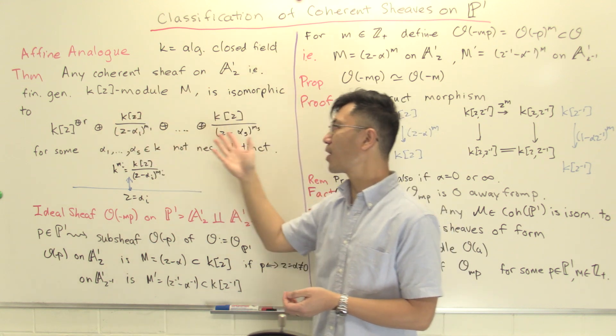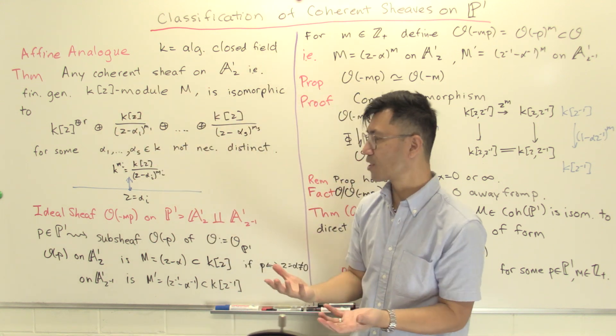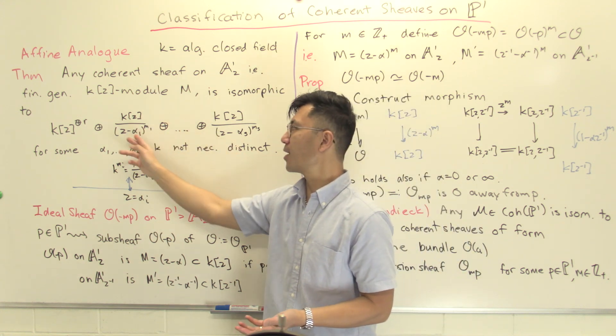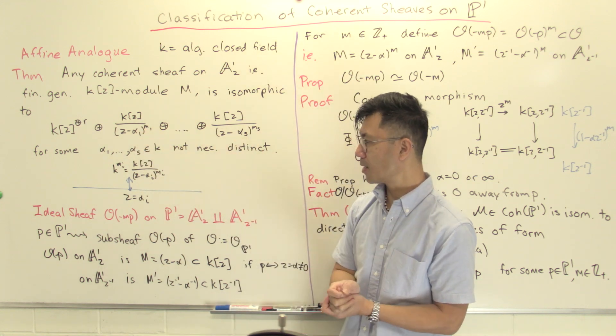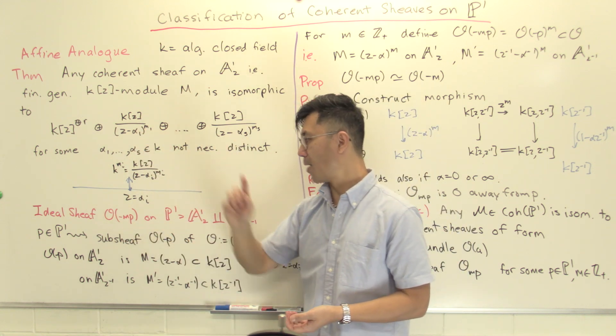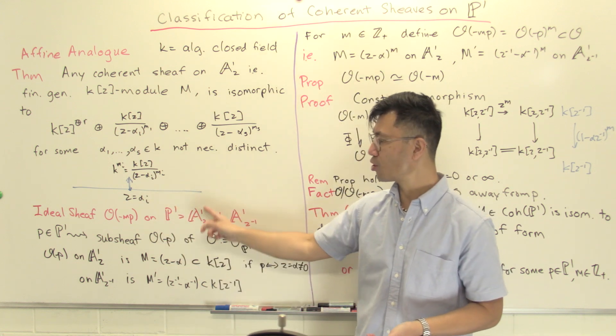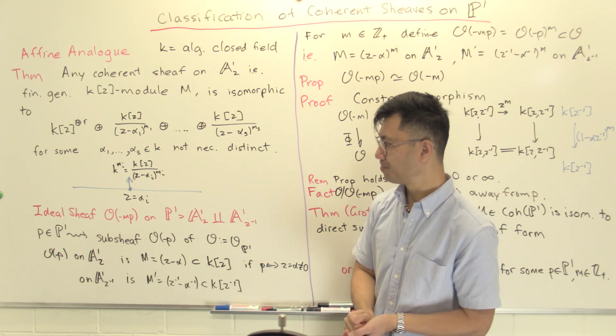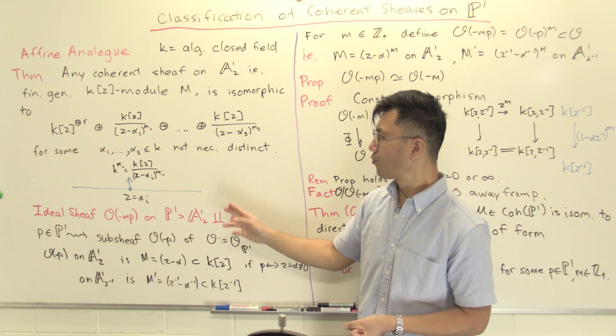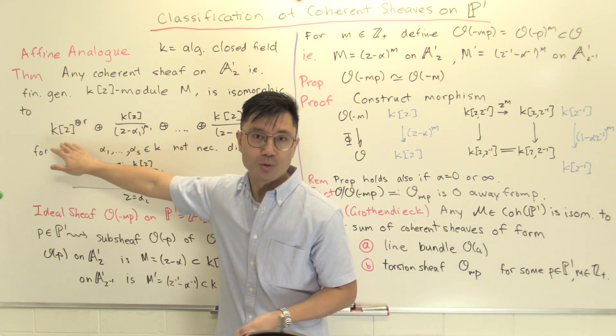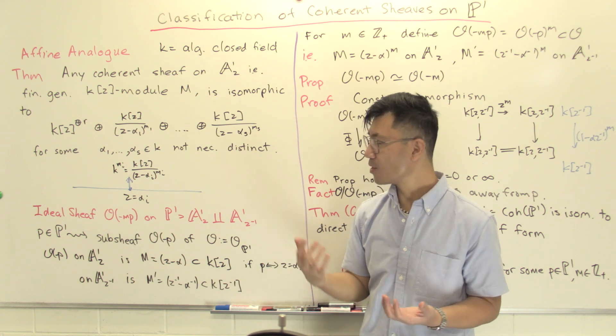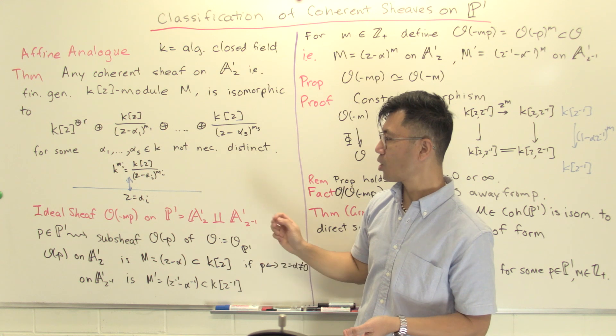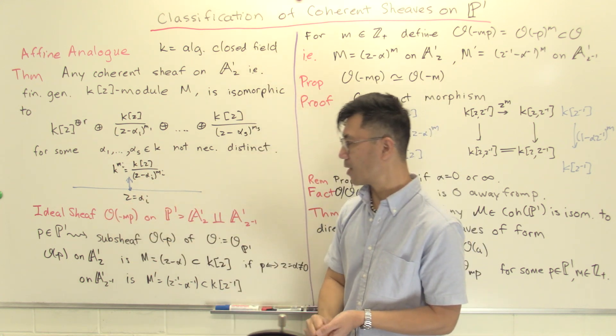We want to generalize each of these things into the case of the projective line. Most importantly, we need to generalize these ideals at the bottom, and that's going to give us the notion of O(-mp). The projective line we'll write as the union of the affine Z line and the affine Z inverse line. We've got the analogues of the free parts—they're the line bundles, which I've talked about in a previous video. So I want to have a look at these cyclic ones now.